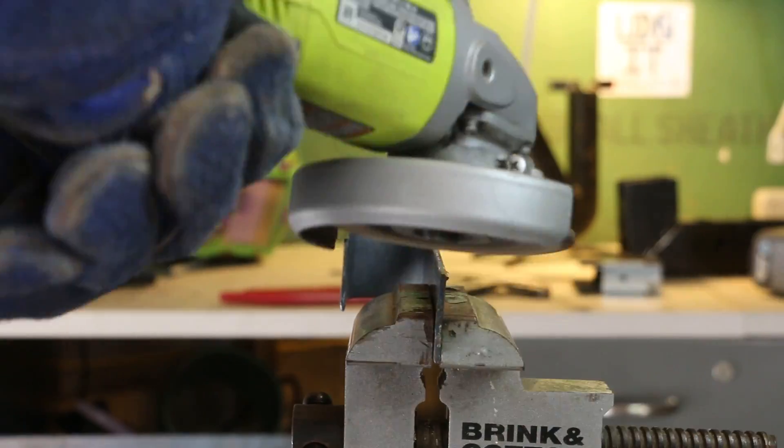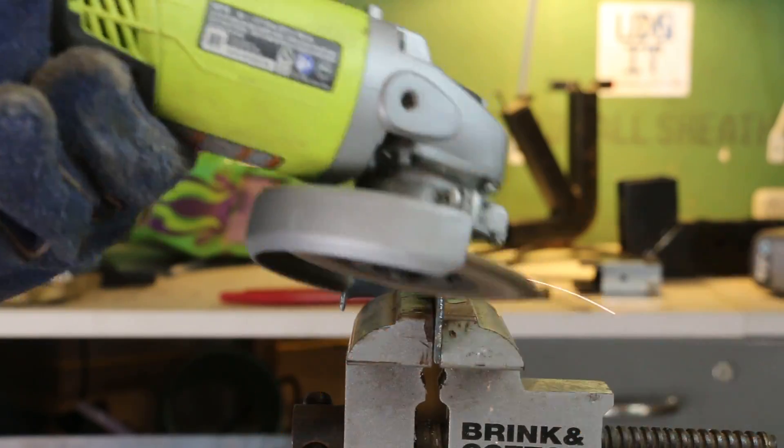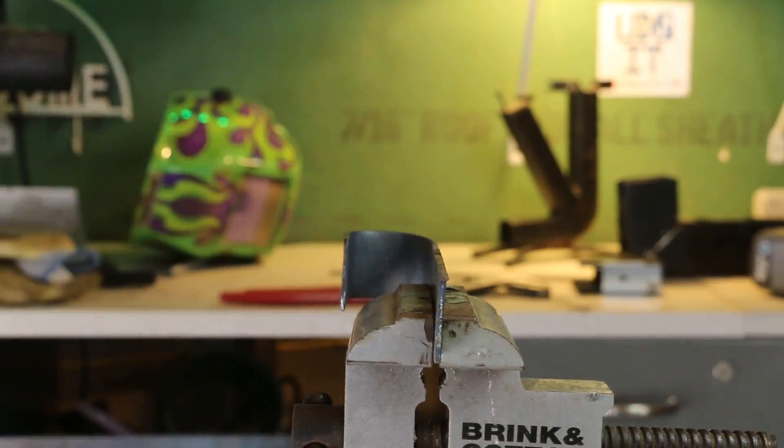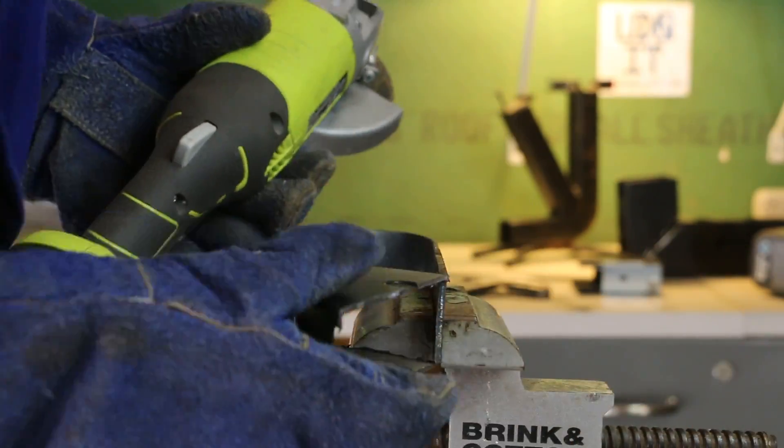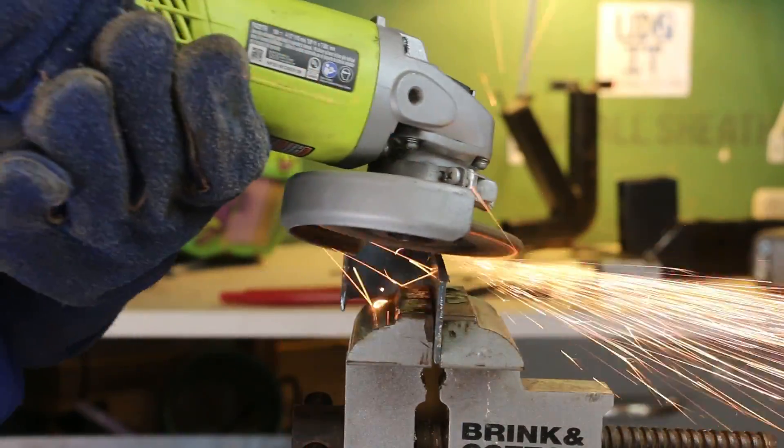Something I realized as I was doing the initial tack welds on this is that it was just a little wider than my box tube. So I'm going to thin this down by about an eighth of an inch so it will nest inside the box instead.